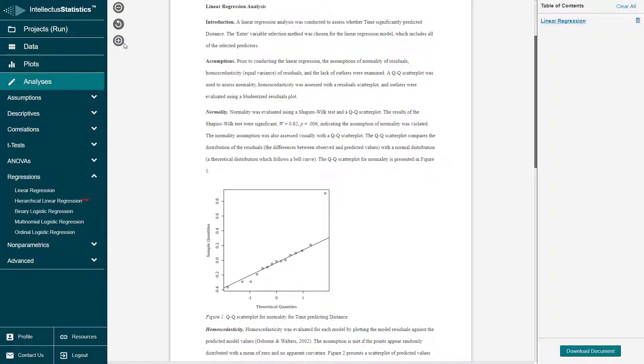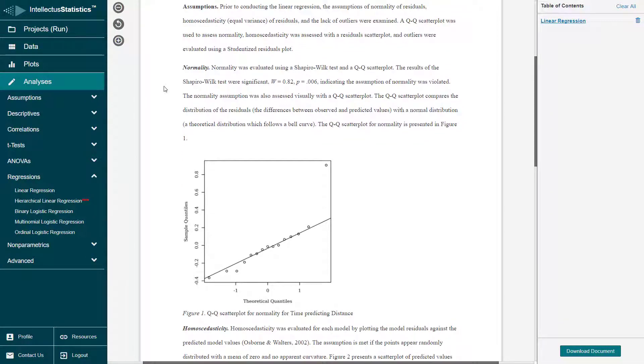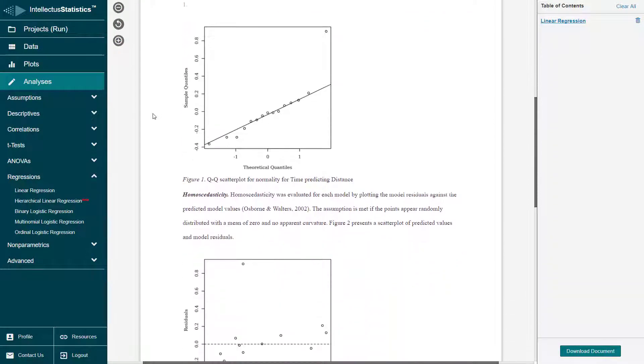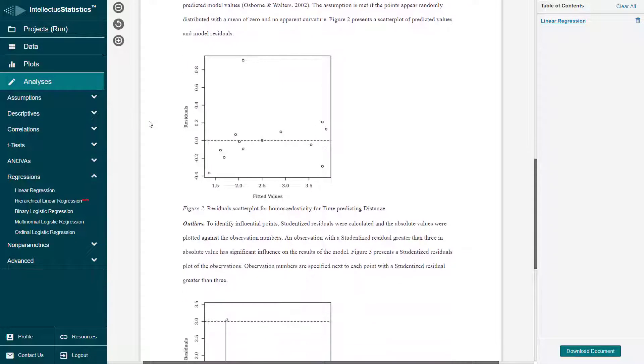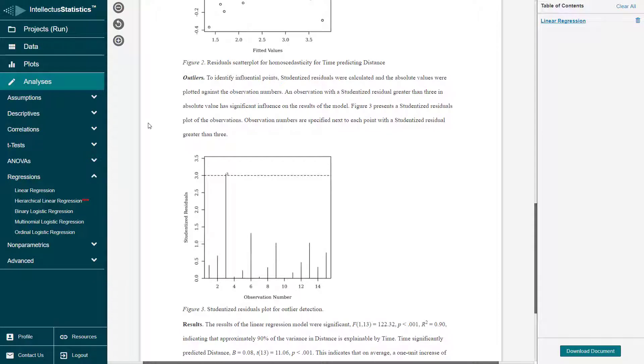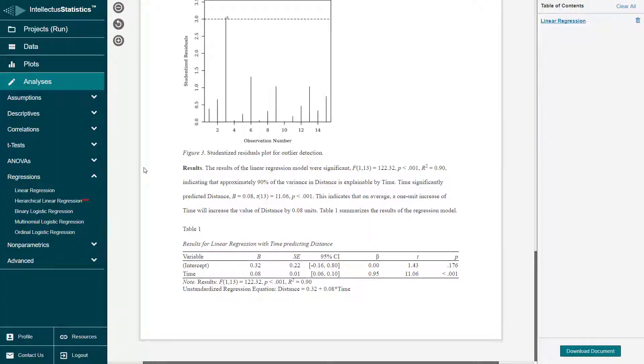In seconds, you get the entire regression: the assumptions, normality, homoscedasticity, outliers, and then finally your results interpreted with APA tables.